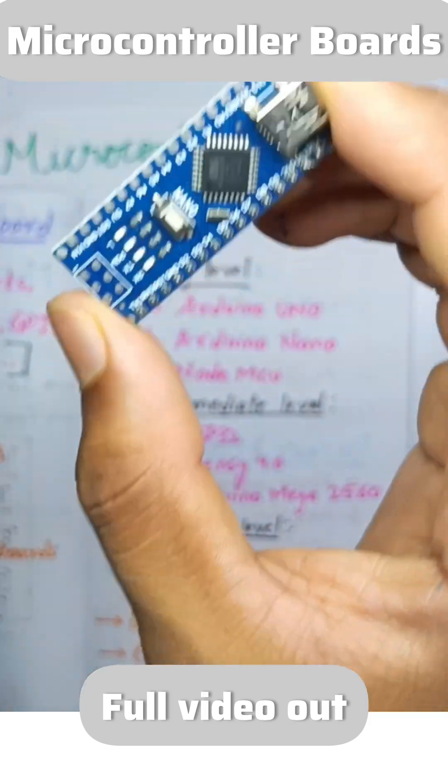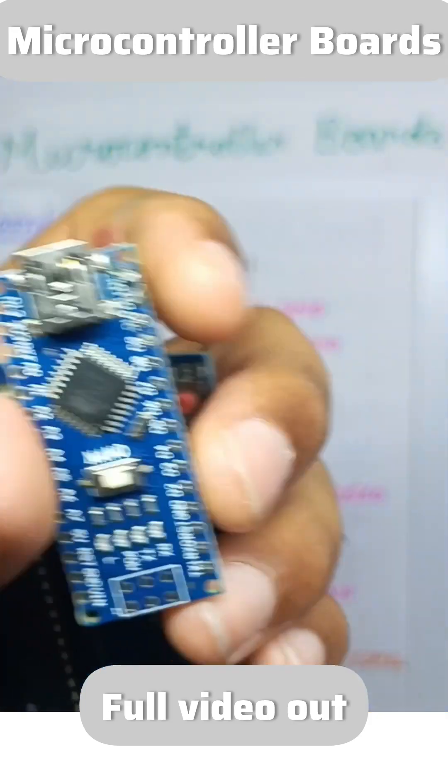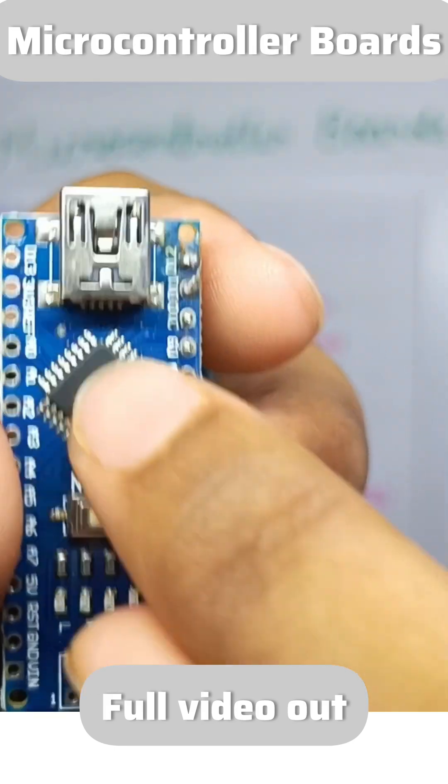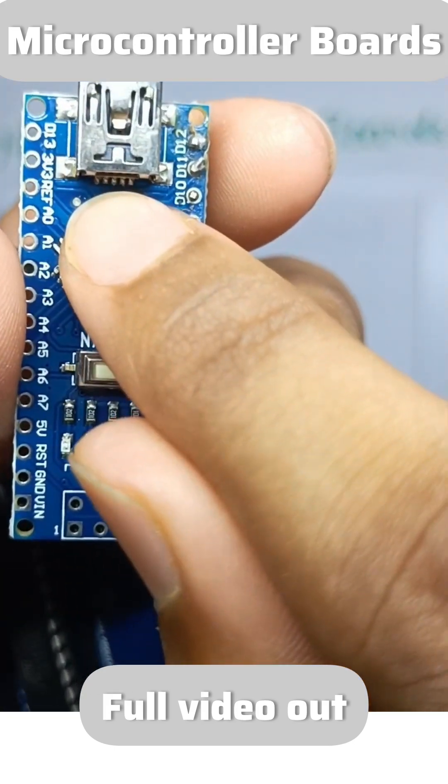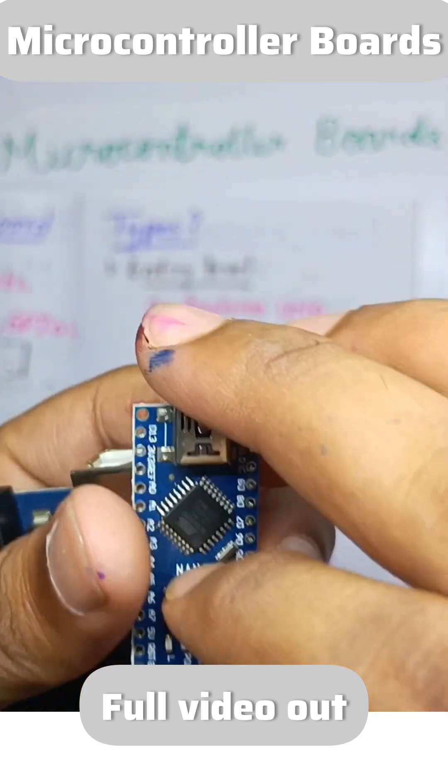And this is Arduino Nano. You may compare the sizes. Arduino UNO, Arduino Nano. And it also has this one. This is called a microcontroller. When the microcontroller is combined with external peripherals, that is a microcontroller board.